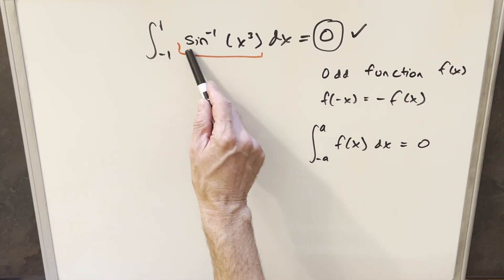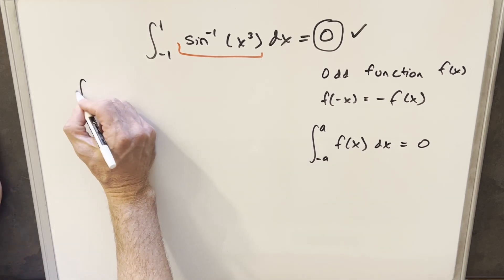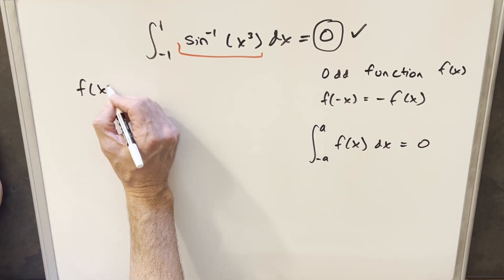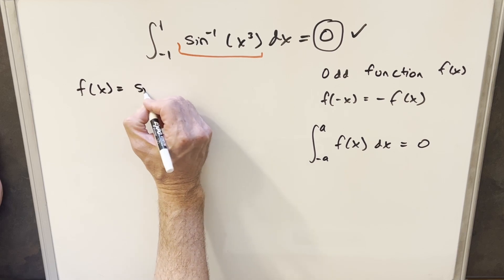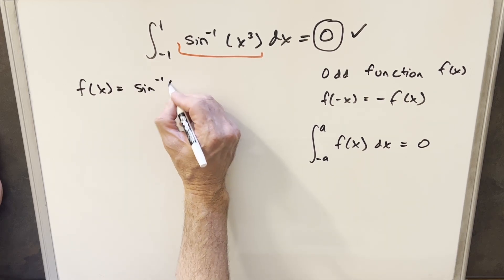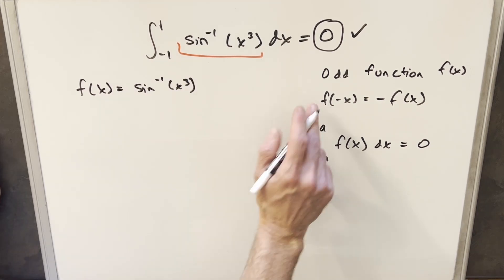Now, if for some reason you weren't sure, you didn't know that arcsine was an odd function, let's say, well, you could just go through this process of proving it. So we can say our function is going to be this whole thing here, arcsine of x cubed. For this property, what we want to evaluate is f of minus x.